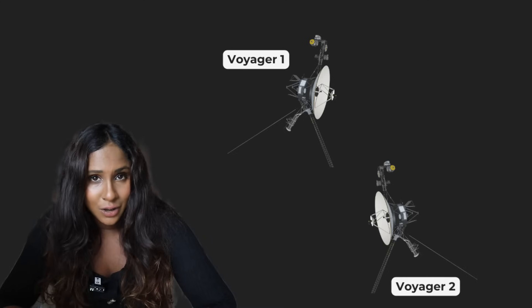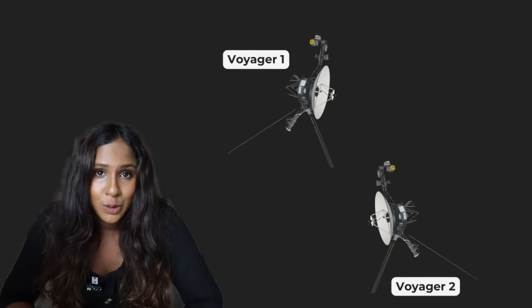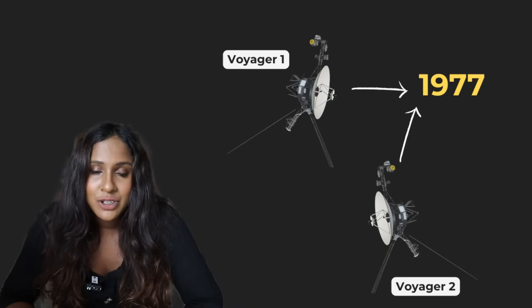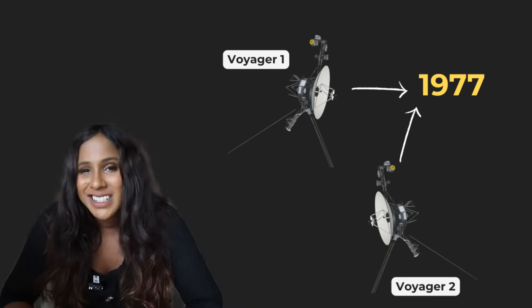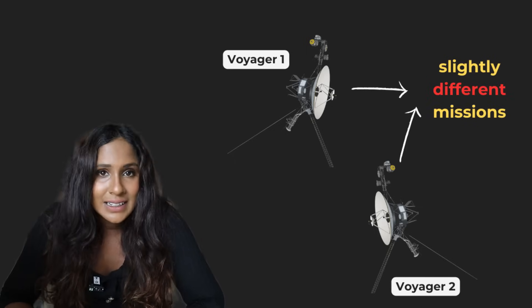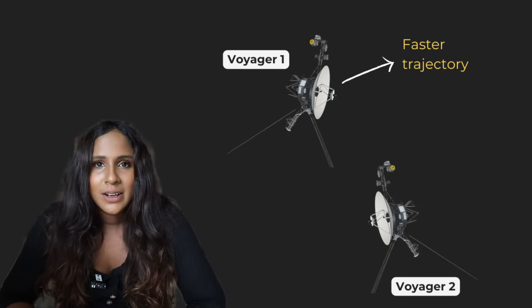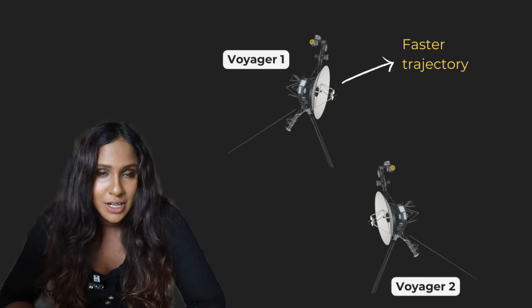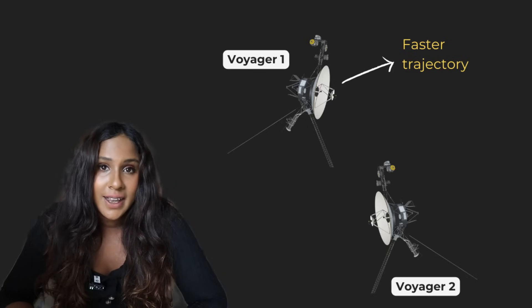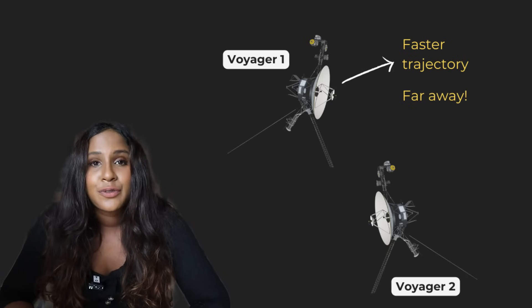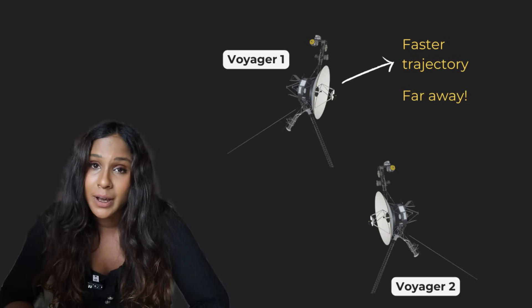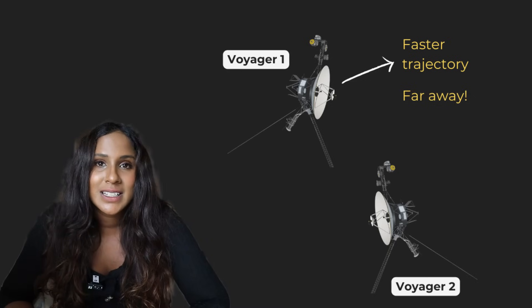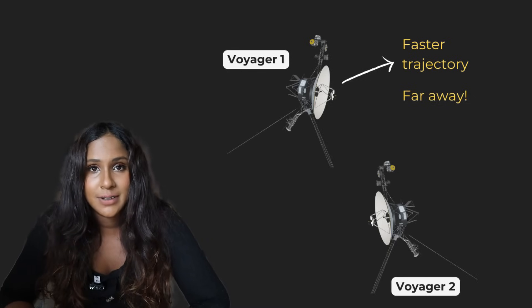Voyager 1 also isn't alone. It actually does have a twin called Voyager 2. Both were launched in 1977, about 16 days apart. And they both have slightly different missions. Voyager 1 was sent on a faster trajectory, meaning that it reached Jupiter and Saturn quite quickly and is now the furthest human-made object from Earth, speeding into interstellar space, completely beyond our solar system.